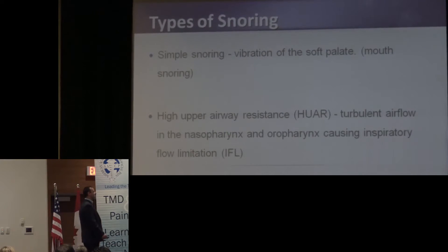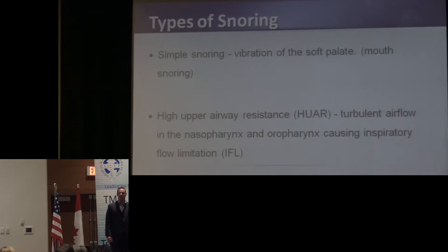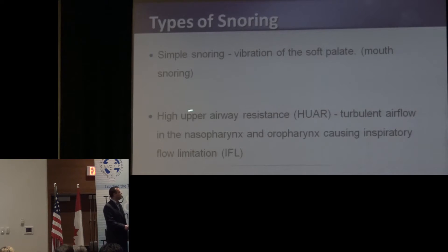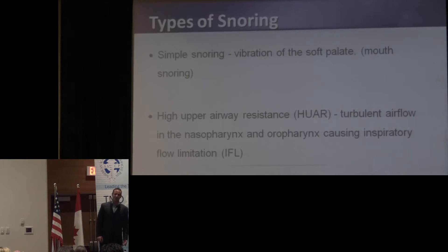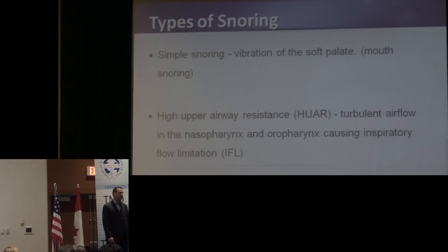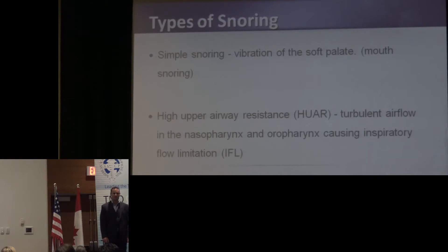Two types of snoring: snoring with the mouth open — very easy to address, all you have to do is get the mouth closed. The second type of snoring is high upper airway resistance, turbulent airflow in the nasopharynx. It's the more difficult one. We show people how to decongest the nose and how to bring their breathing volume down towards normal. No devices, no gadgets, just simple feedback.